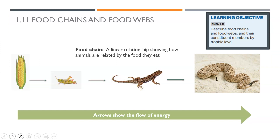Let's start by looking at a food chain. Food chains are linear relationships — in a straight line — showing how animals are related by the food they eat. We've got the corn being eaten by the grasshopper, who's being eaten by the lizard, who's being eaten by the snake. The arrows show the flow of energy: the available energy in the corn is given to the grasshopper, then the grasshopper gives its energy to the lizard, and the lizard's energy goes to the snake.